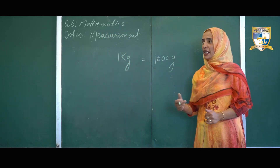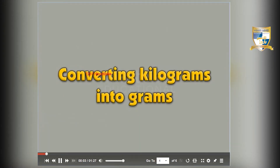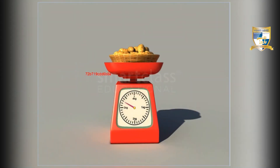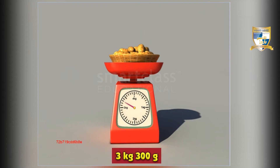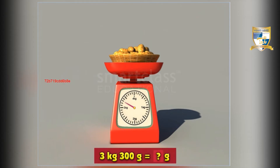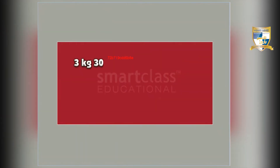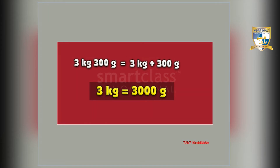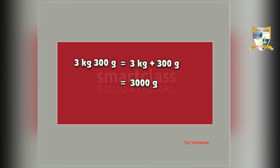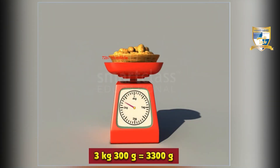To understand the conversion of the units of weight, let us have a look at this example. The mass of this basket of potatoes is 3 kilograms 300 grams. What is its mass in grams? First, split 3 kg 300 grams into 3 kg plus 300 grams. 3 kg equals 3000 grams. Add 3000 grams and 300 grams, and you get 3300 grams. So the mass of the potatoes in grams is 3300 grams.